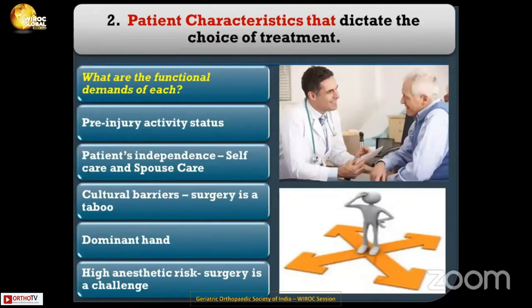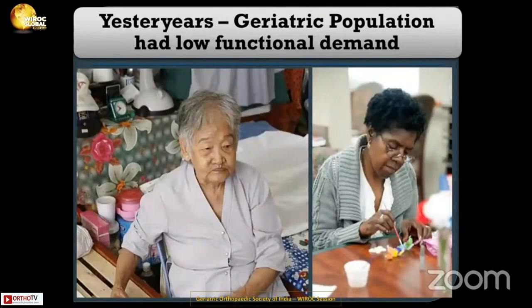The second thing I look at is patient characteristics, which dictate the choice of treatment. What are the functional demands of each patient? What is the pre-injury activity status? Patient independence, self-care, spouse care — very important in geriatric patients. Cultural barriers, whether surgery may be a taboo, whether it is the dominant hand, and the risk of surgery including anesthetic risk must all be considered.